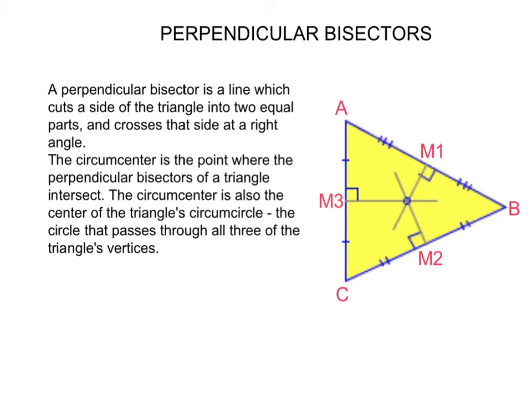The perpendicular bisectors are perpendicular lines to each of the sides that pass through the midpoint of the sides. For example, M1 is the midpoint of side AB, M2 is the midpoint of side CB, and M3 is the midpoint of side AC.